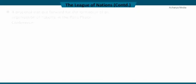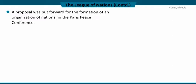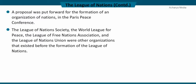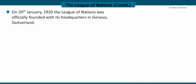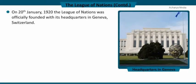A proposal was put forward for the formation of an organization of nations in the Paris Peace Conference. The League of Nations Society, founded in 1915, the World League for Peace, founded in 1917, the League of Free Nations Association, founded in 1918, and the League of Nations Union were other organizations that existed before the formation of the League of Nations. On 28 January 1920, the League of Nations was officially founded with its headquarters in Geneva, Switzerland.